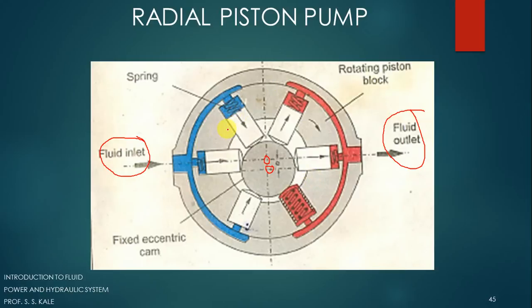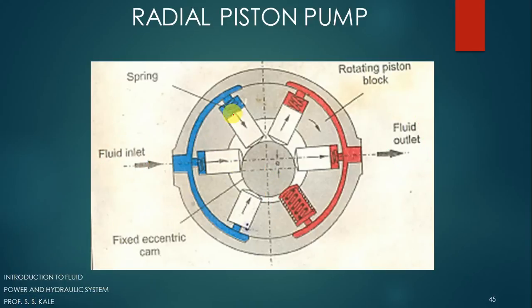When this starts rotating, the internal pistons will start rotating as well. From this point onward, the pistons are moving toward the center. Springs are provided here, and these springs always exert force on the piston toward the center. Because of that, there will be firm contact between the rod and the piston. This contact will not break because the spring continuously exerts force toward the center.